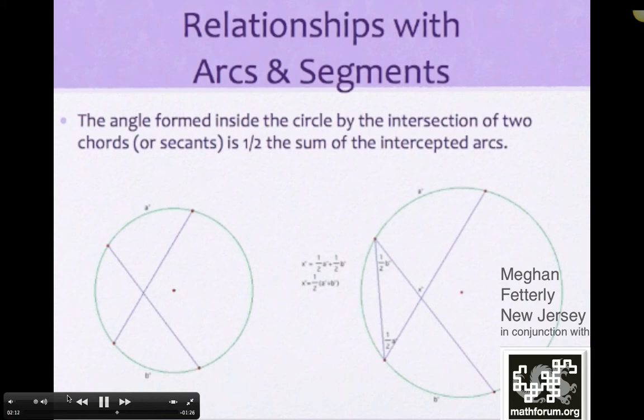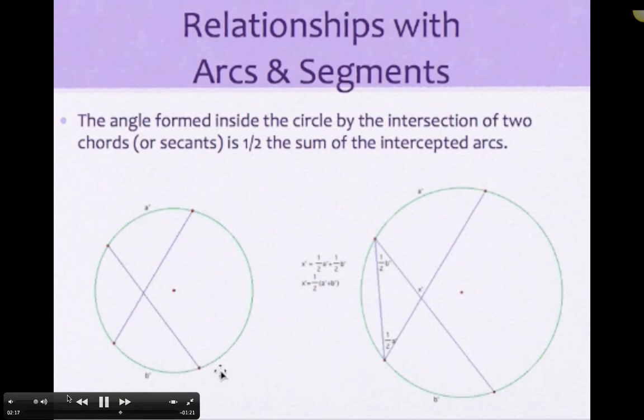Angles formed inside of the circle by the intersection of two chords is one half the sum of the intercepted arc. So I started out with two chords.